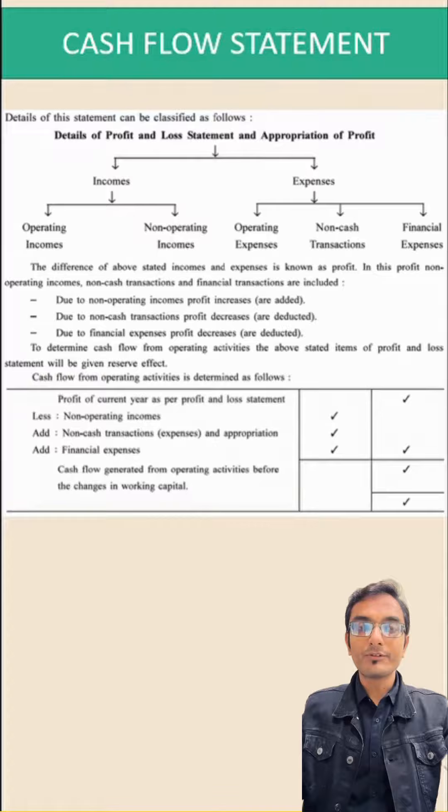Start with profit of the current year. From that we need to deduct the non-operating incomes, add the non-cash transactions and appropriations, and add financial expenses. We'll get the cash flow before changes in working capital. Then we need to adjust the amount of working capital.